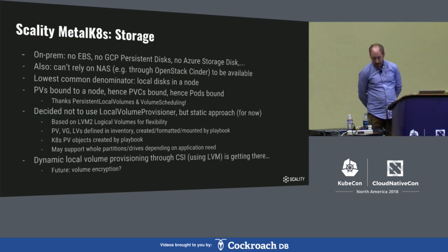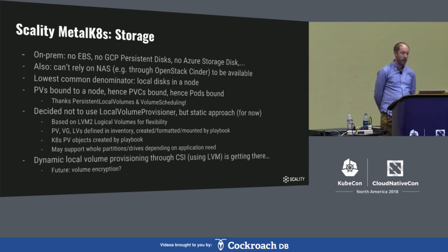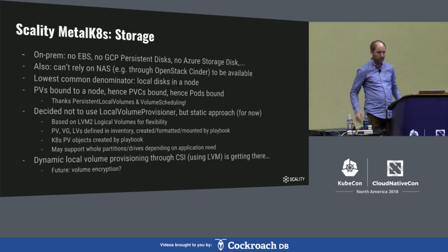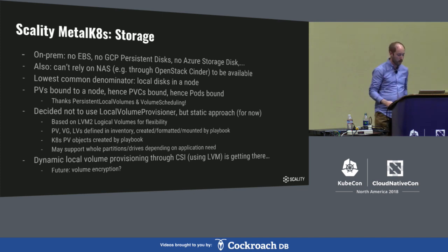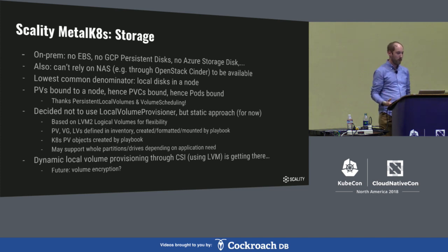Storage. Unlike Kubernetes clusters deployed on cloud environments, we cannot have something like ELB, persistent disks, or block storage from Azure available. We also cannot rely on network-attached storage to be available because it may simply not be there at the customer site. Many of the services we deploy as part of Zenko are tuned for directly-attached storage — MongoDB works with a local disk. Those services do in-application replication, failover, and recovery, so there's really no need for us to use network-attached storage. We went for the lowest common denominator between all kinds of deployments, which is local disks.